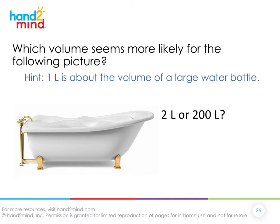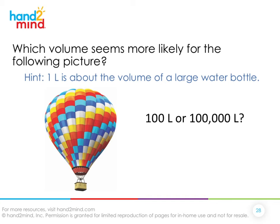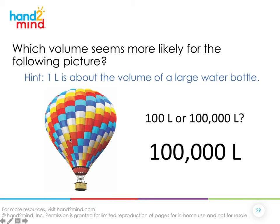Now we have a full-size bathtub. Does this look like two liters or 200 liters? Thinking of it in terms of water bottles — two large water bottles or 200? I'd bet it's more like 200 liters. Now something really big: a hot air balloon. A full-size person — or four people — can fit in the basket. Does this contain 100 liters of air or 100,000 liters? It's probably more like 100,000 liters.